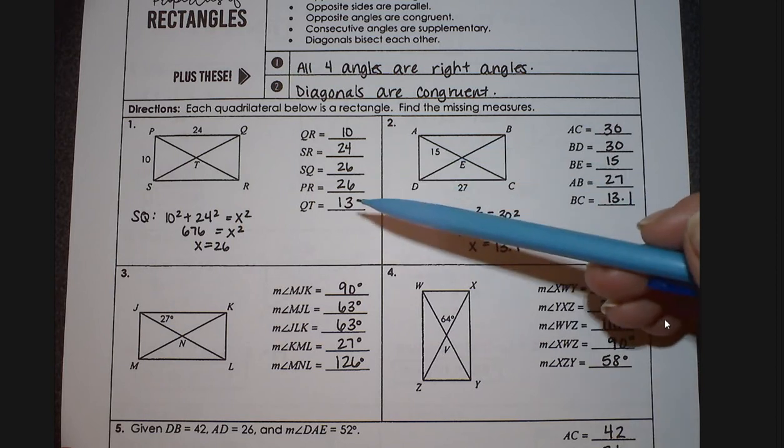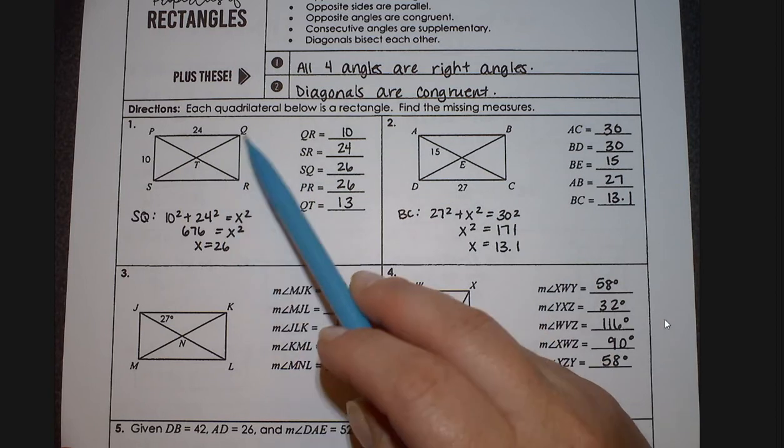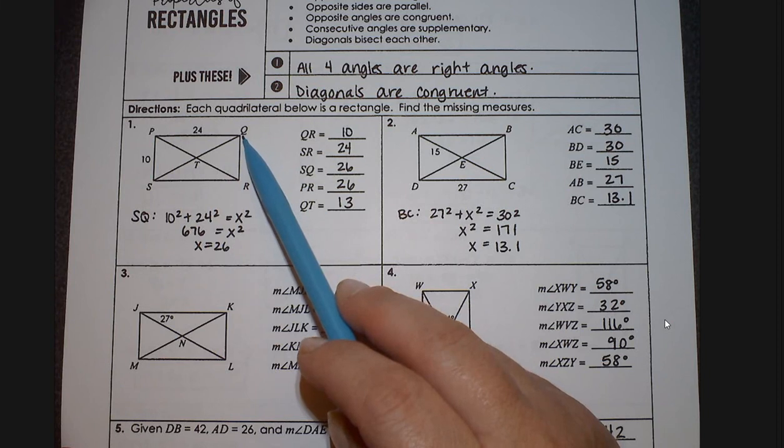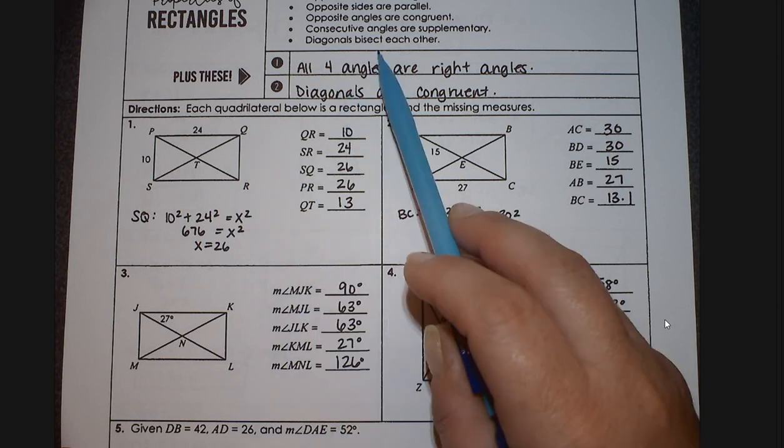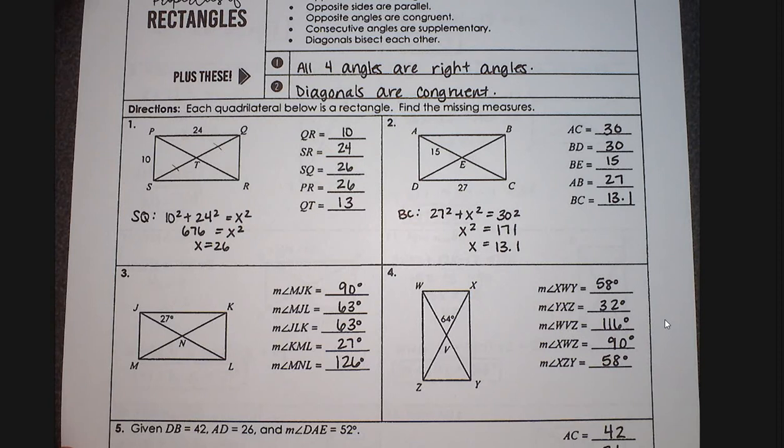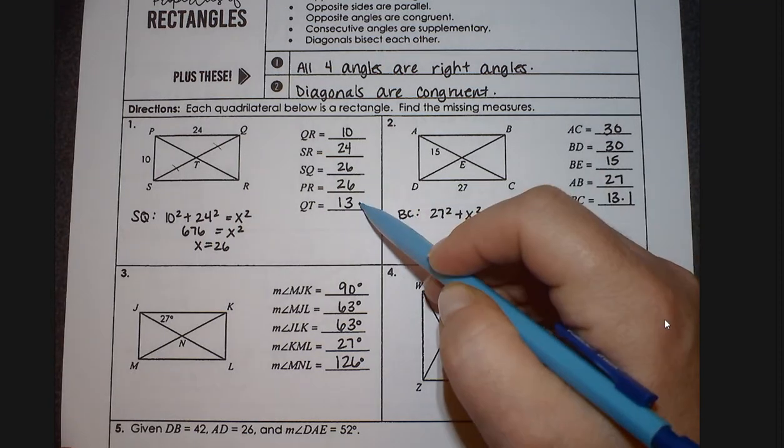So now you're going to find the length of QT, and QT, you can see it here, is part of the diagonal. And then we remember that diagonals bisect each other, and bisect means to cut them in half. So you know that this side is equal to that side, and that's how you get 26 divided by 2, which is 13.